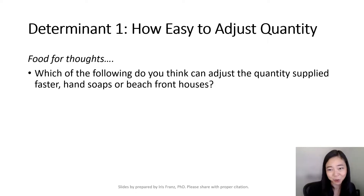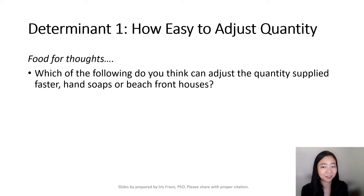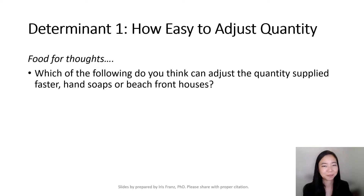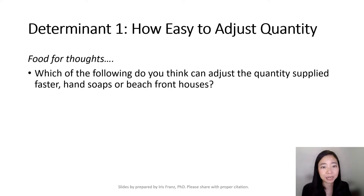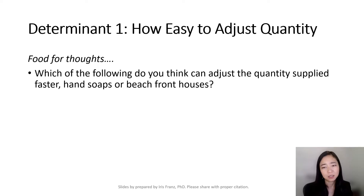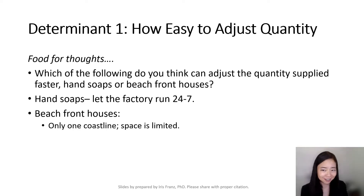If you're selling soaps, you just let the factory run 24/7, then you're able to produce more — and that's great. But if you're a builder and you are selling beachfront houses, then there is only one coastline; you are not able to squeeze a lot of houses in front of the coastline. So you get it.